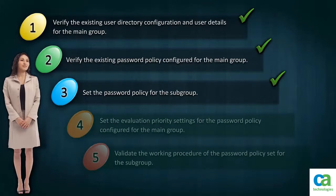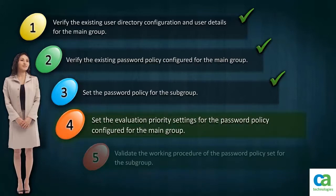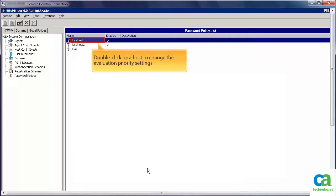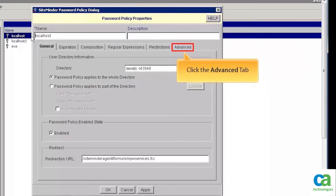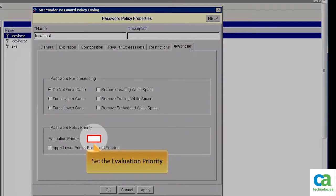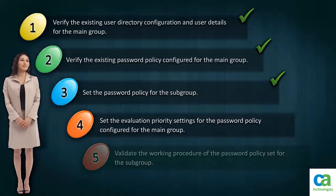Now we have two password policies, so our next task is to specify the evaluation priority settings for the password policy configured for the main group. Double-click localhost to change the evaluation priority settings. Click the Advanced tab and set the evaluation priority — in this scenario it is set to 2, which is lower than the subgroup. Click Apply and then OK. We have now set the evaluation priority settings for the password policy configured for the main group.